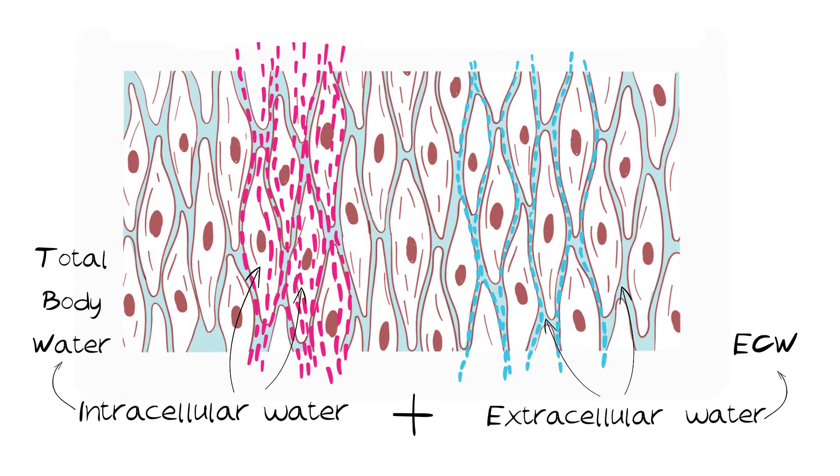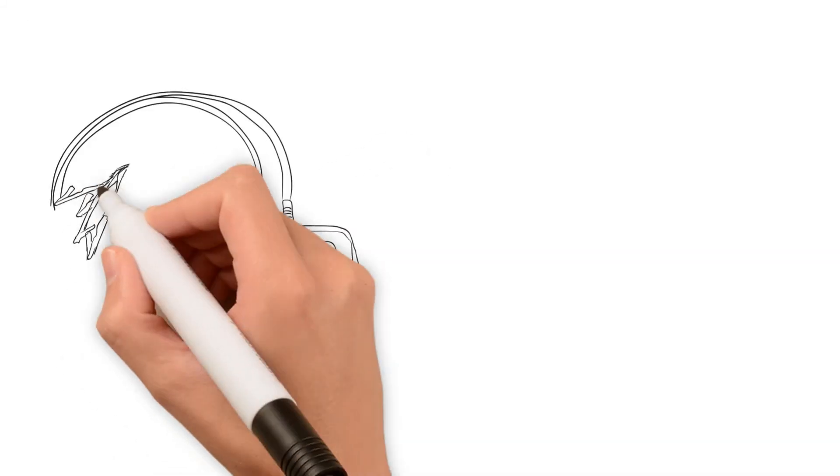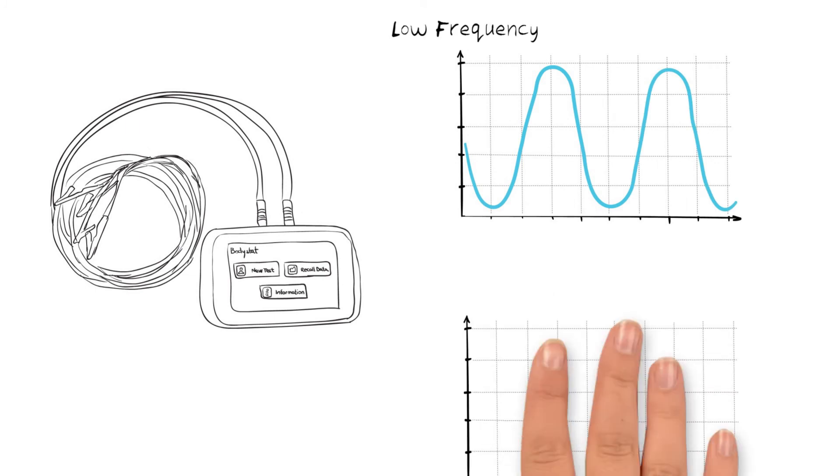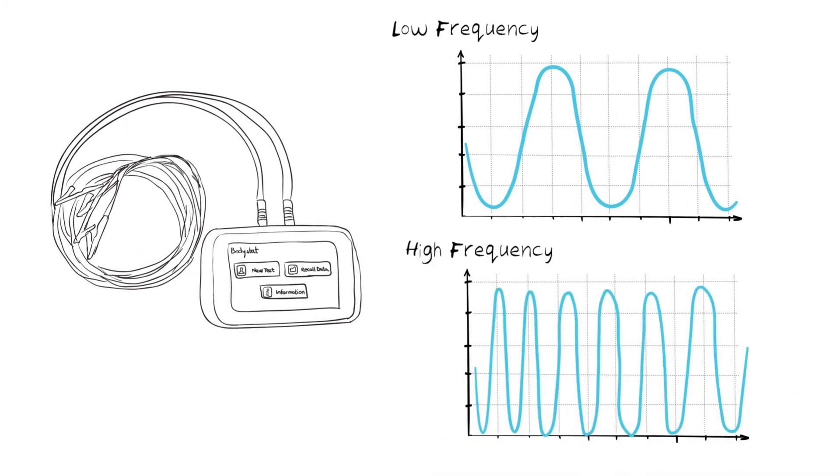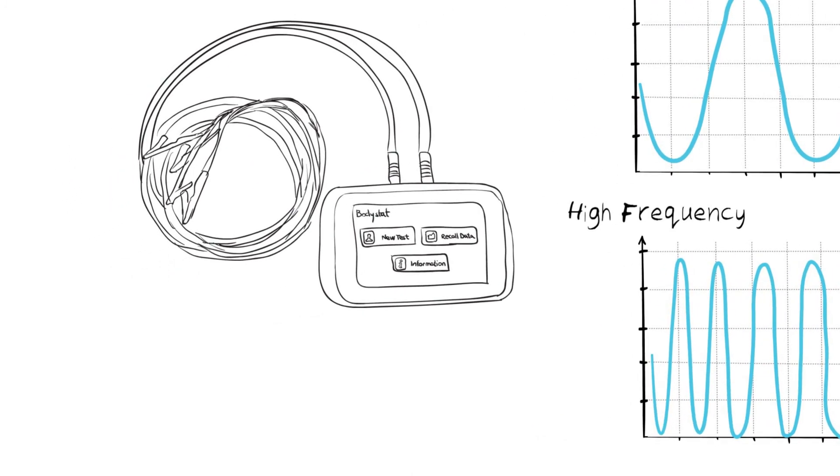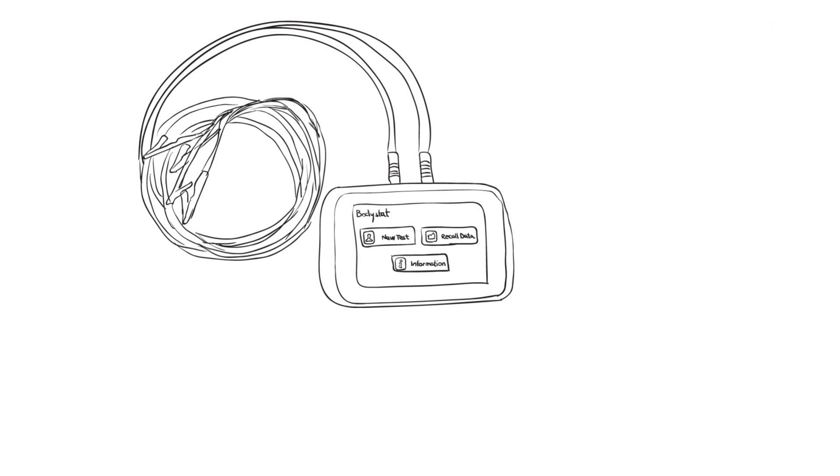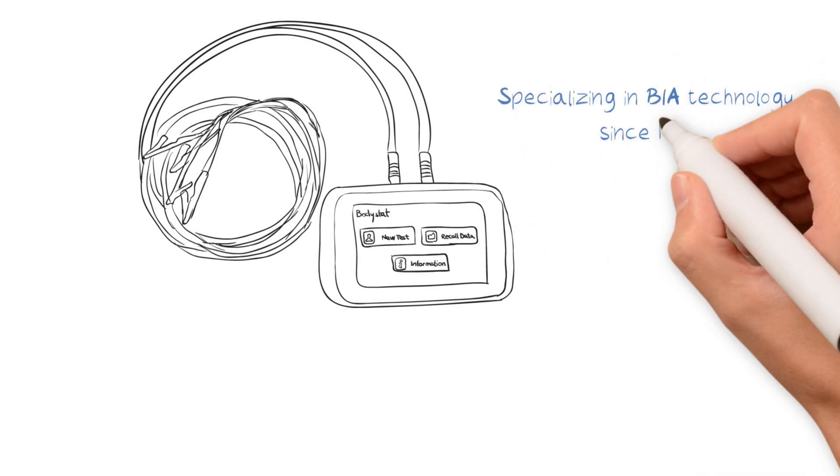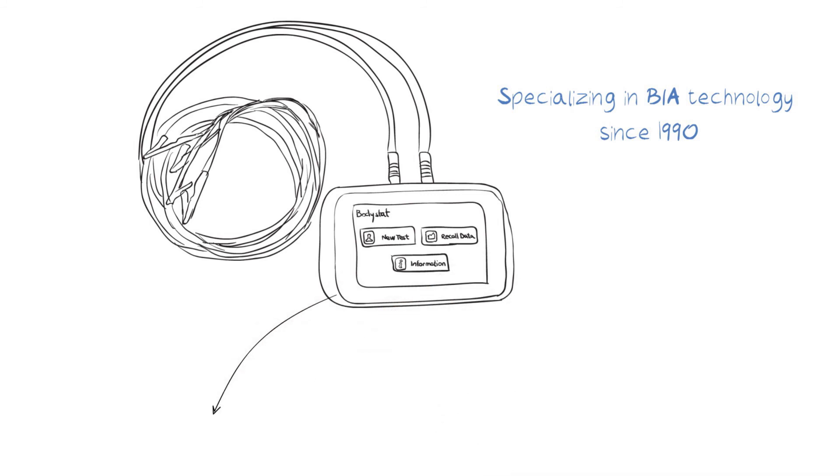Bodystat products range from single frequency to multi-frequency to the latest in spectroscopy technology, providing a range of fluid and body composition data. Bodystat has been specializing in BIA technology since 1990, continually developing top of the range BIA products designed for end users and researchers alike.